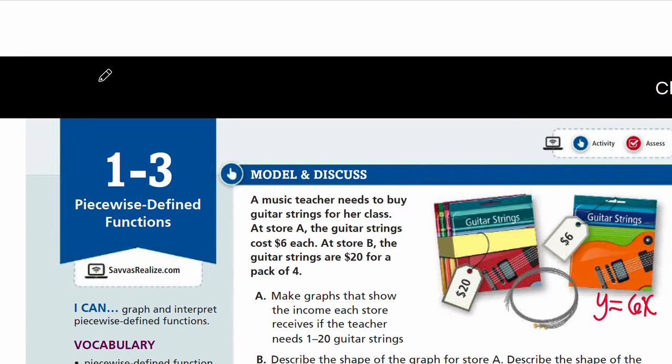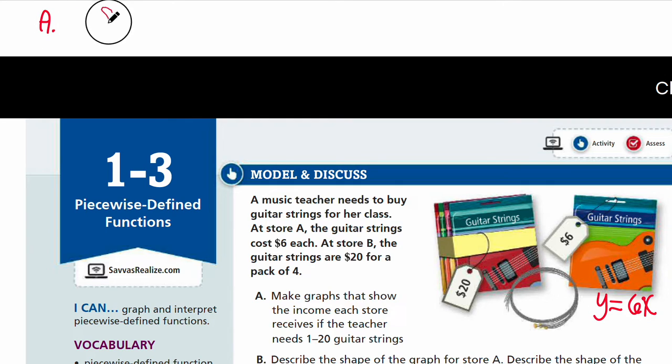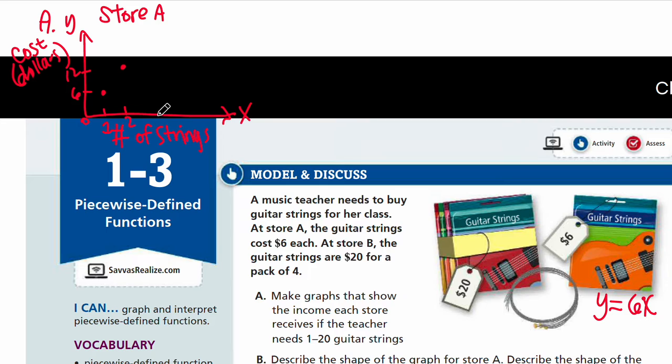So in part A, your store A will have X variables as number of strings and then Y variable as income or dollars or you can say cost. There you go. And then from 0, you buy 1 string and it's going to be $6. You buy 2 strings, it's $12. You buy 3 strings, it's $18, and so on. So it increases by 6.